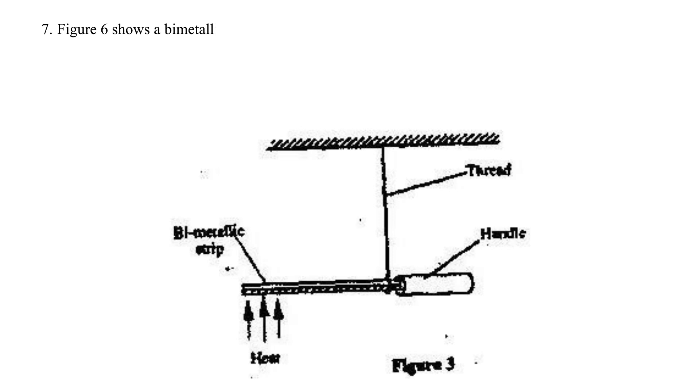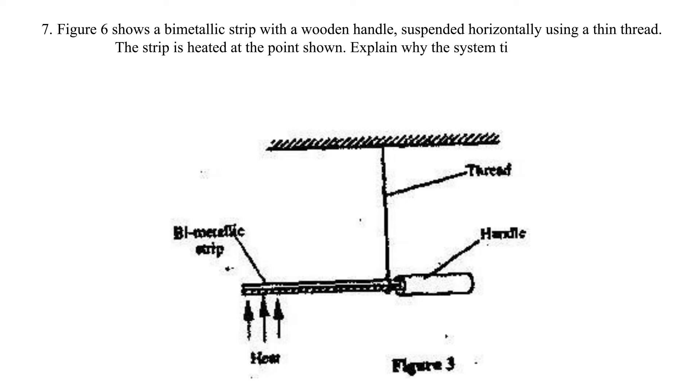Question 7: Figure 6 shows a bimetallic strip with a wooden handle suspended horizontally using a thin thread. The strip is heated at the point shown. Explain why the system tips to the right.